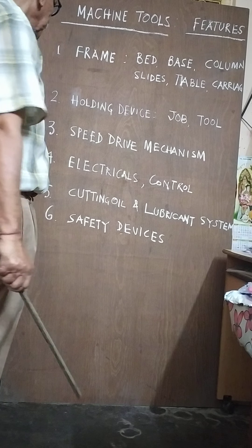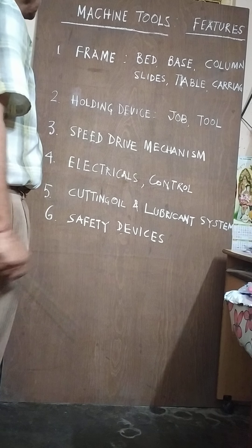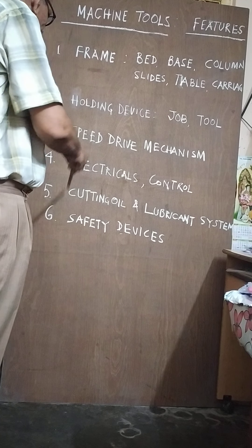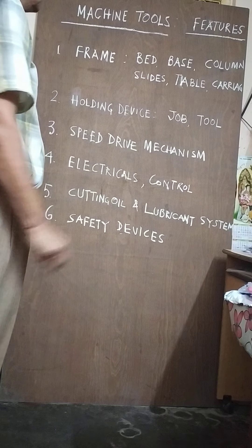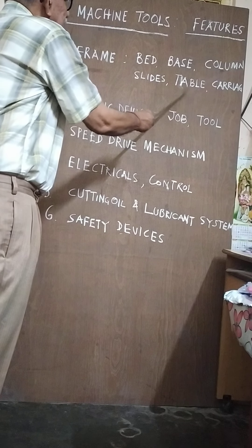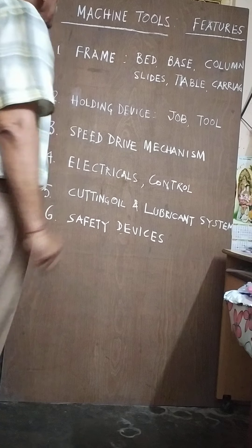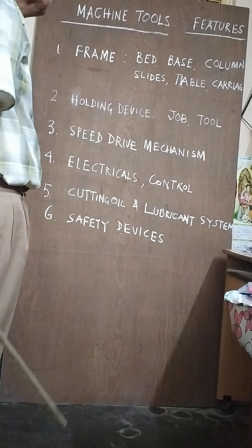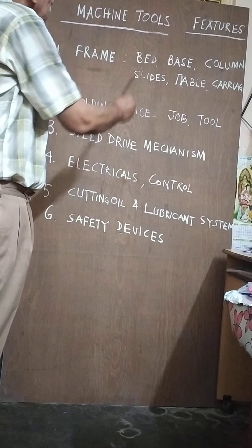Whatever the form of the machine, the machine tool has the following features. The bed, base, column, slide, table, and carriage constitute the frame. The frame constitutes the rugged structure and holds all components of the machine.